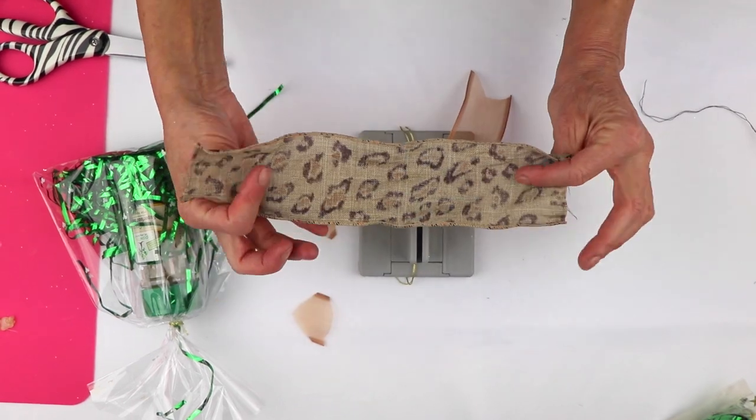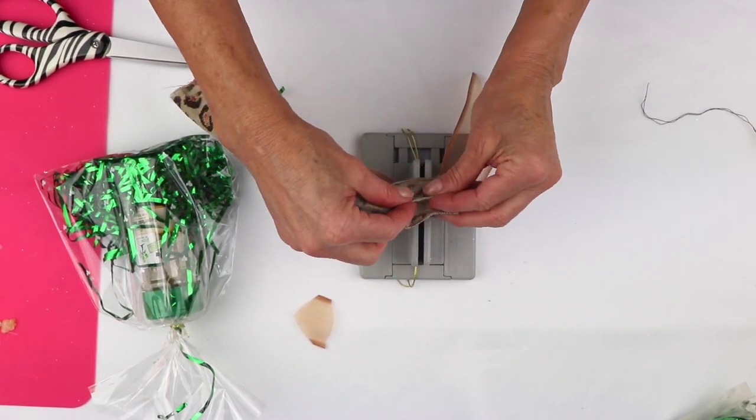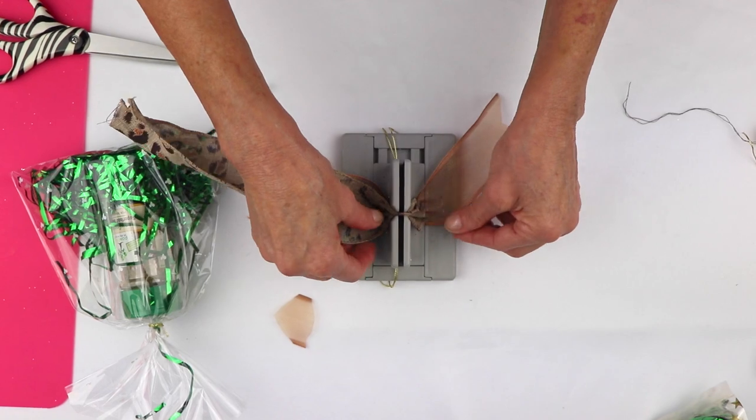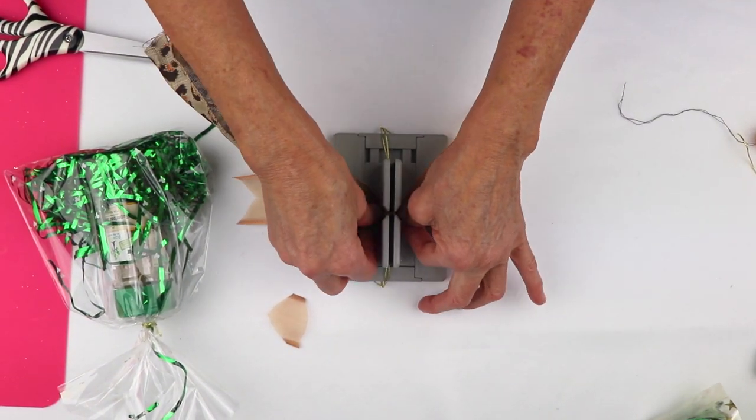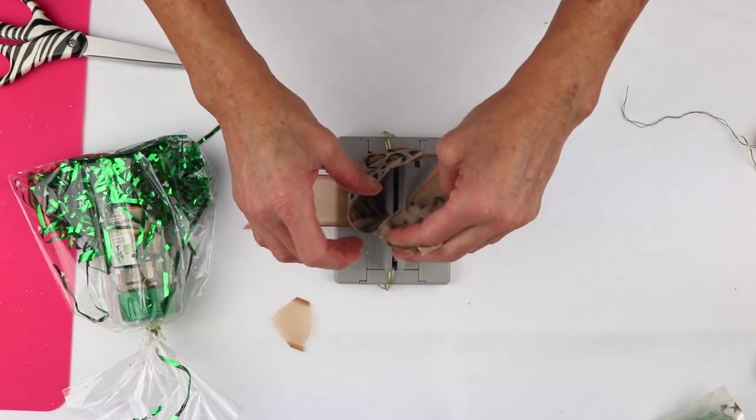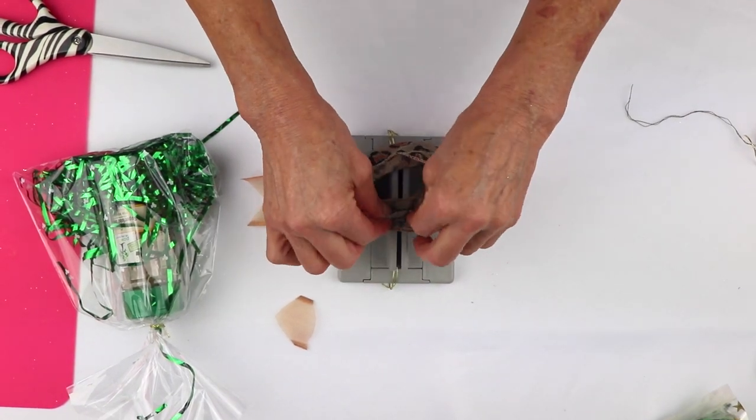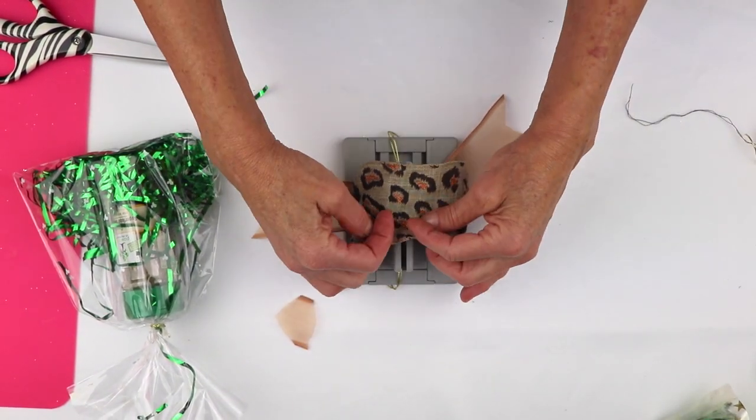I'm going to take this cute little animal print ribbon and I'm just going to put this here into my Bowdabra. And I'm just putting a little crease in the middle as I lay it down. Then I'm going to fold it back over and just scrunch that into my mini Bowdabra.